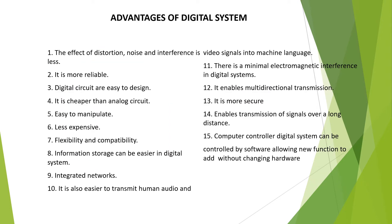What are the advantages of digital over analog? Digital systems have less noise and less interference. They are more reliable, easier to design, and involve cheaper circuits. Information storage is very easy and information is less likely to be lost. Digital systems are also more secure. You can go through these points in detail.